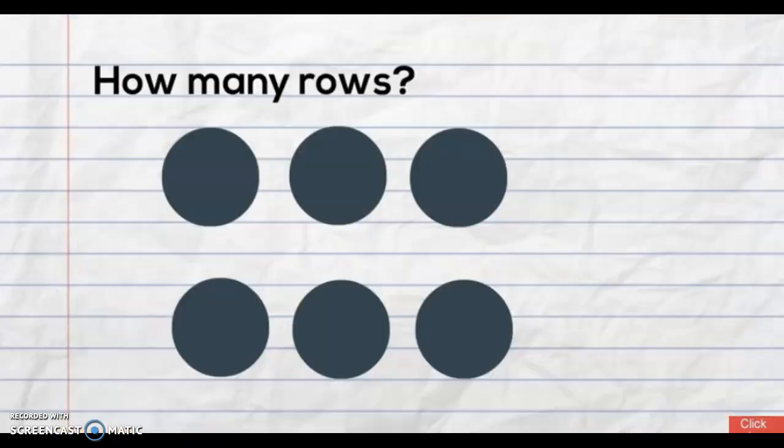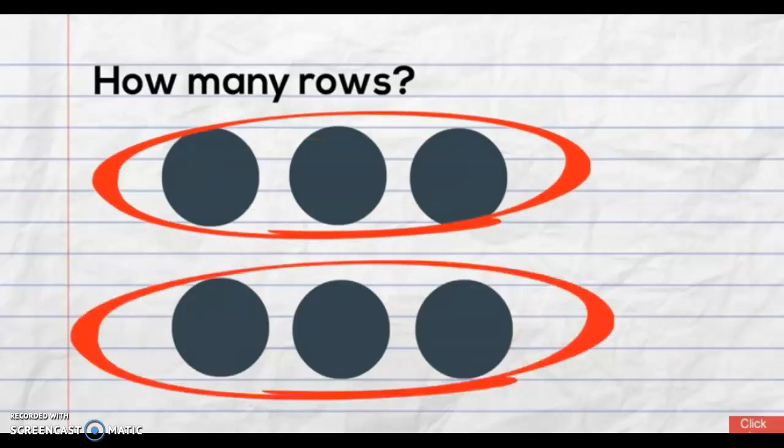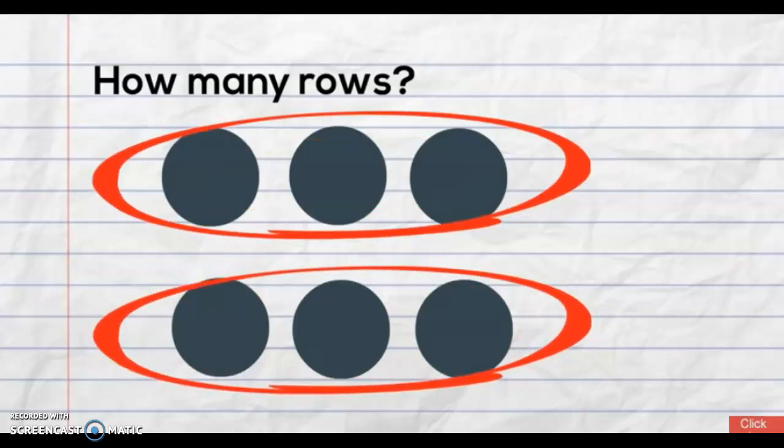Let's look at this array now. How many rows are there? Yes, that's right, there's two rows. One, two. Two horizontal rows.